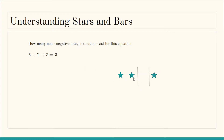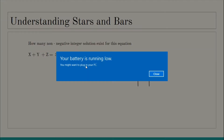There won't be a single configuration in which a region gets negative stars — stars can only be zero or positive. There is no way to represent negative stars, so the variables can only assume values from zero onwards. That is why all variables x, y, and z must be greater than or equal to zero.